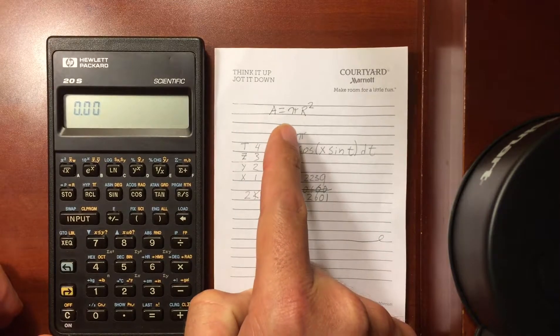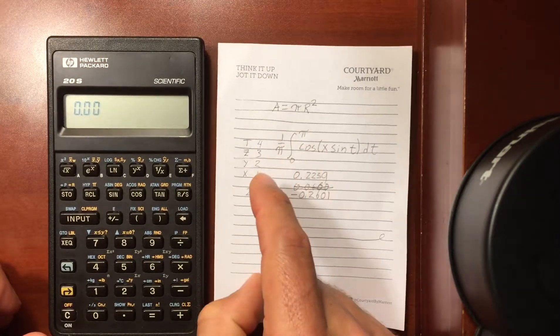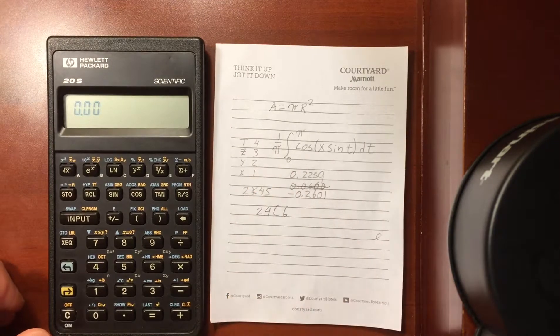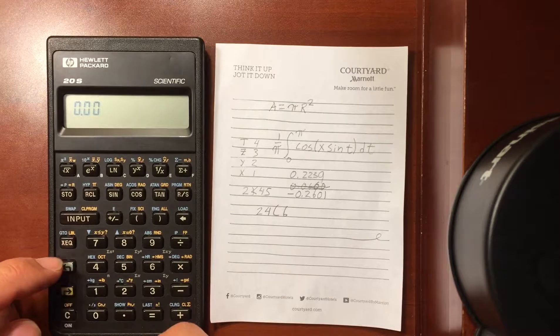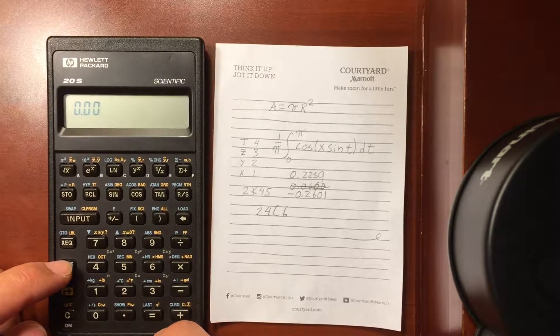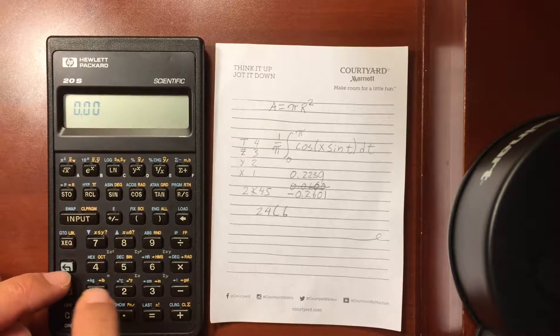So we're going to use this example again. We have the area of a circle is pi r squared, and we want to calculate the area for a whole bunch of different circles, so we're going to enter a program, basically a series of keystrokes, that will calculate that for us.